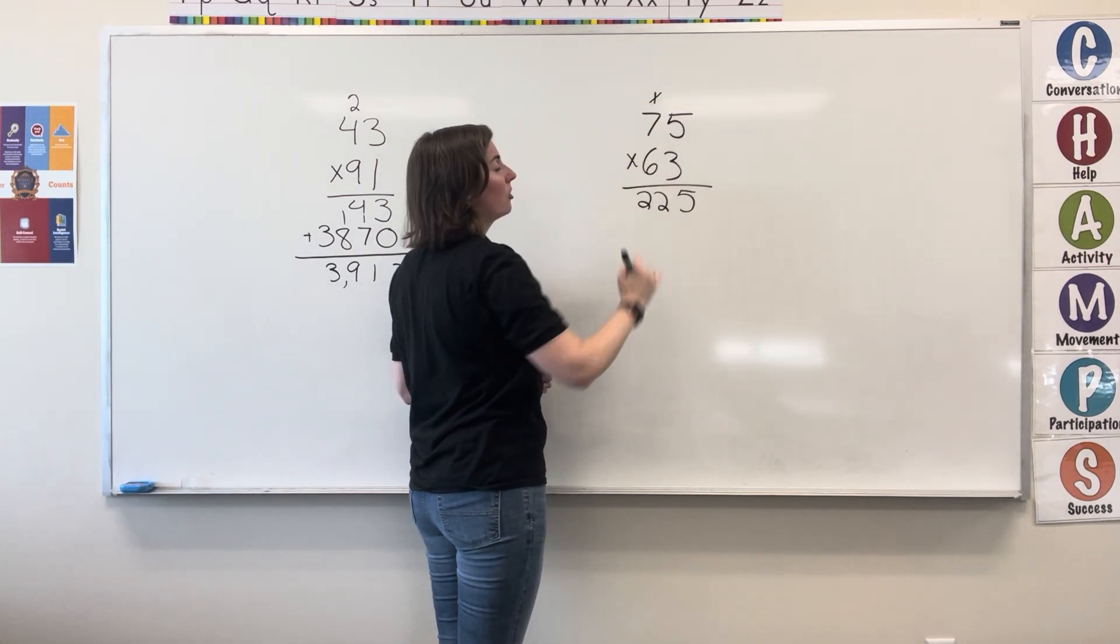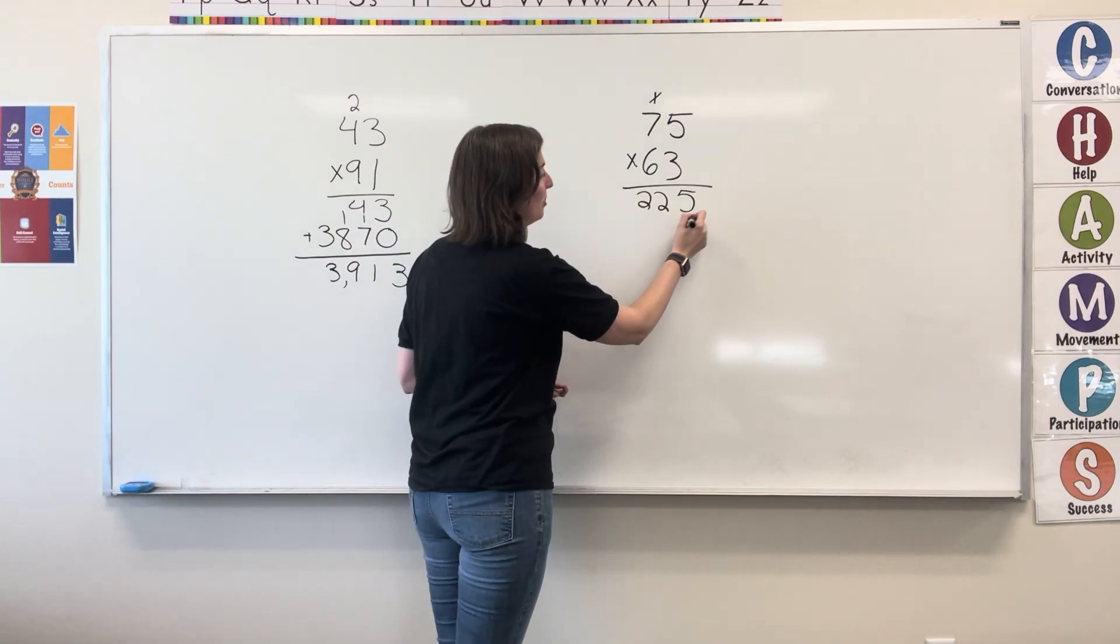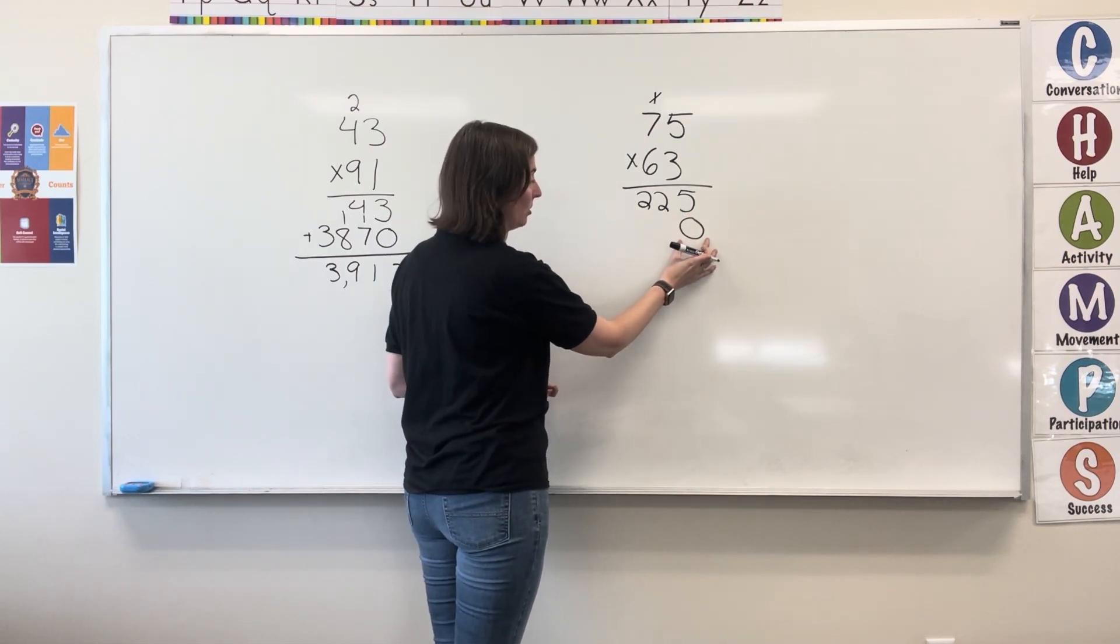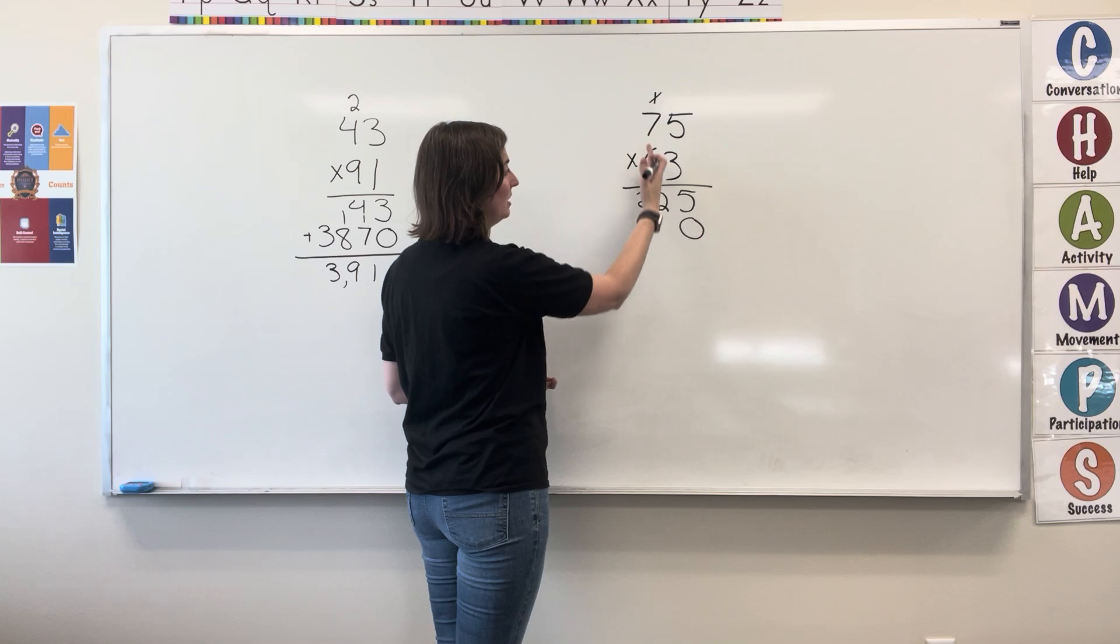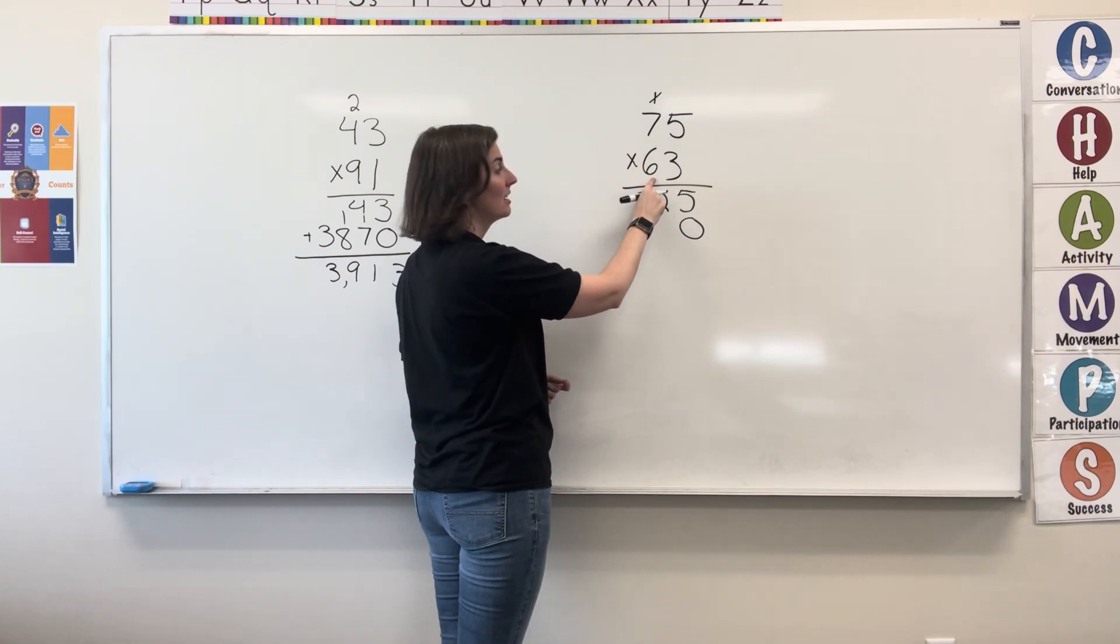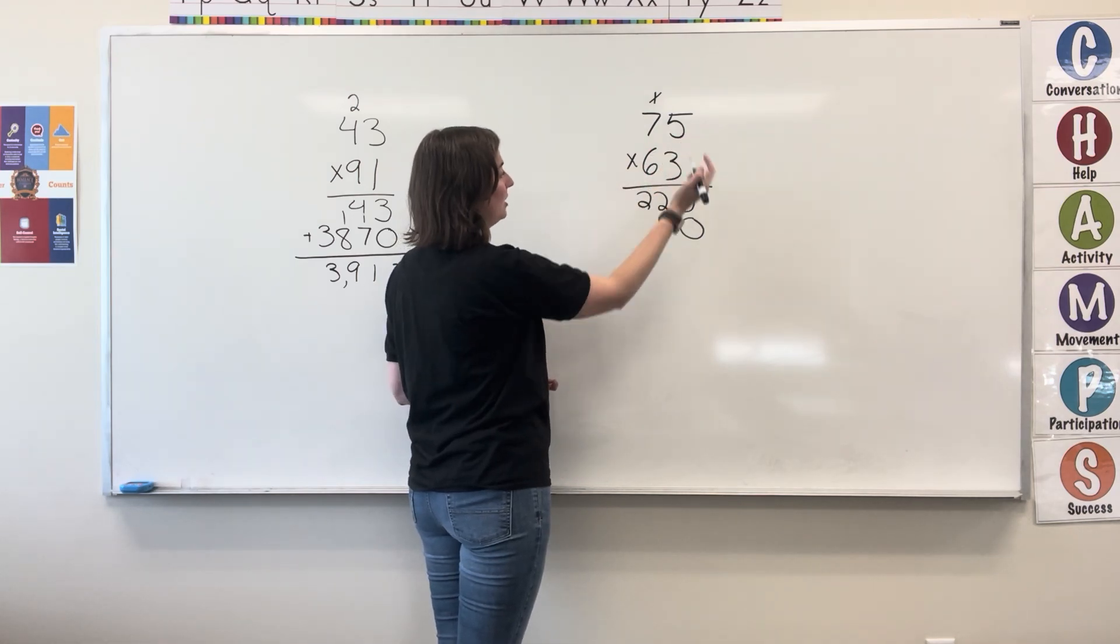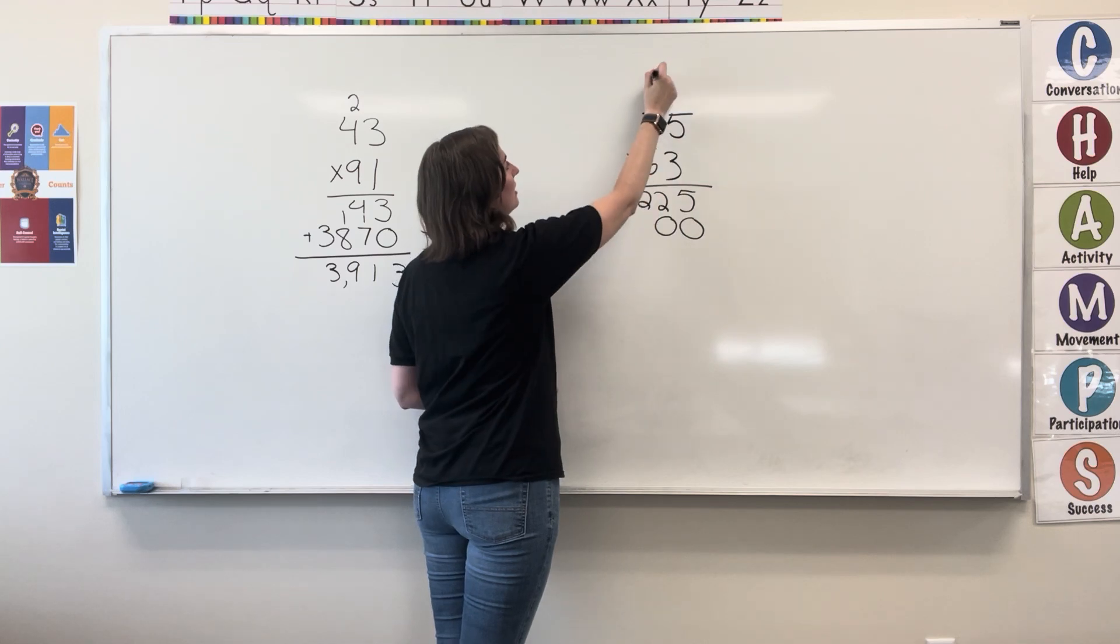You can cross out those numbers that you've already carried over, put your placeholder 0, because again, you're moving into the tens place. 6 times 5 equals 30, write the 0, carry the 3.